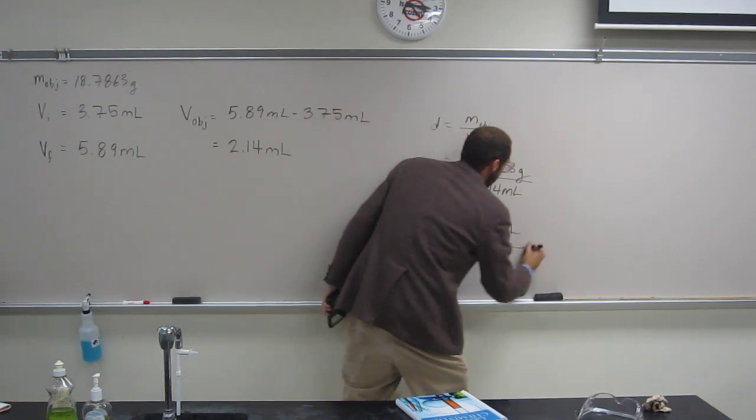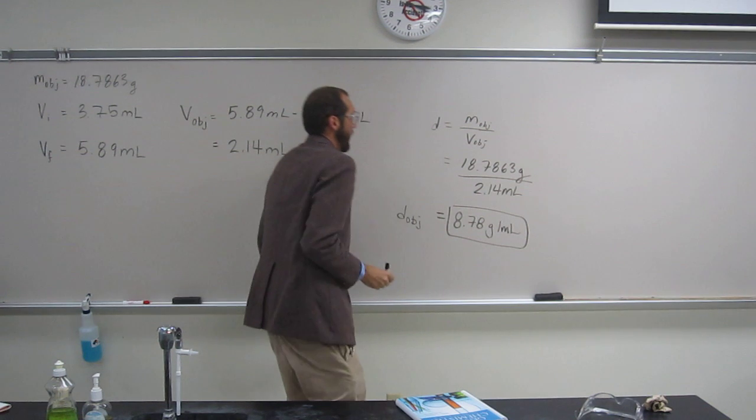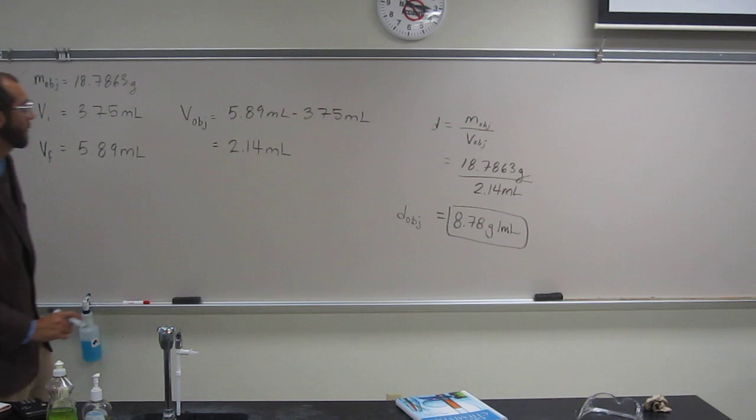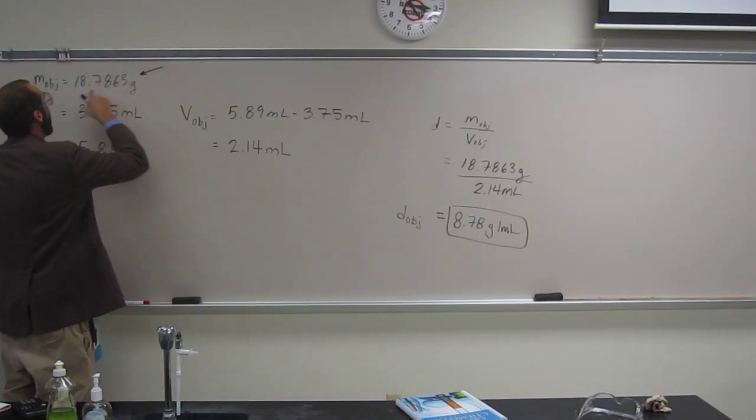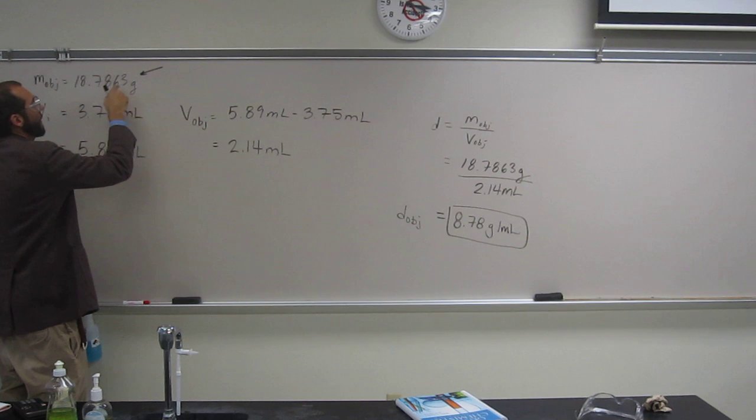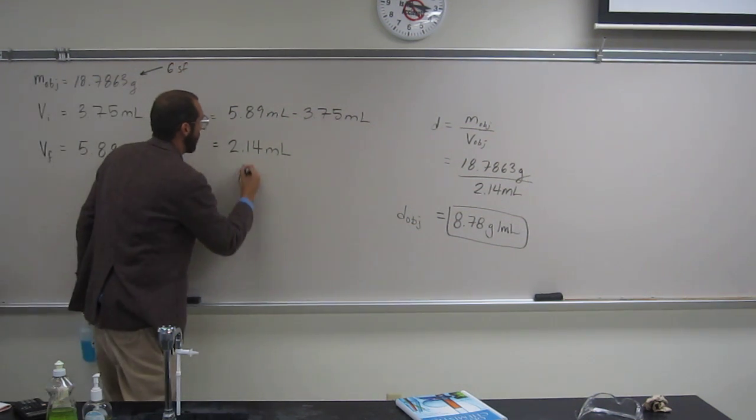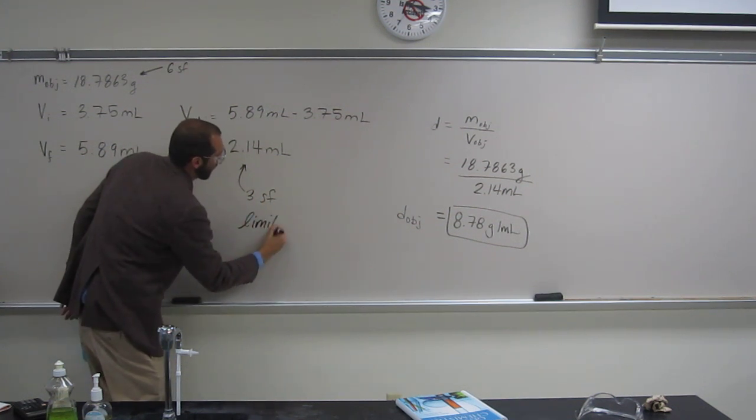So that's the density of the object. And then the second part of the question said, which measurement limits the number of sig figs? Mass or volume? Well, the mass has 1, 2, 3, 4, 5, 6 sig figs, and the volume has 3 sig figs. So the volume is the limiting measurement.